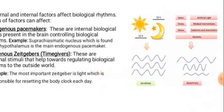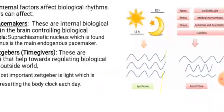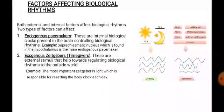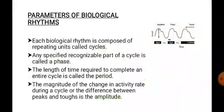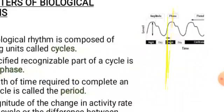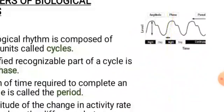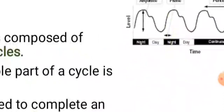This diagram shows how different factors affect the synchronization of biological rhythm. Now, what are the parameters? Parameters mean any measurements. The parameters of biological rhythm describe how we measure the rhythmicity of biorhythms. The first parameter is a cycle — each biological rhythm consists of repeating units, and each unit is called a cycle. Each cycle consists of different types of phases, which are the stages that complete a cycle in different spells. Any recognizable part of a cycle is also called a phase.